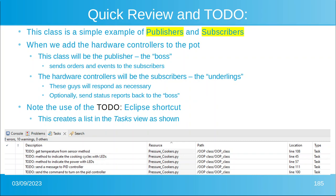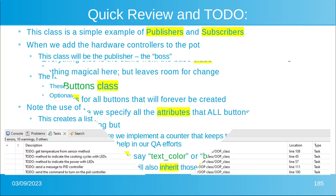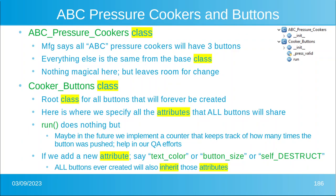That's how the pressure cooker knows what temperature the burner is at, for example. Note the use of the TODO with a colon shortcut from Eclipse. At the bottom of your screen you should see a tasks view. As you put comments with that keyword 'TODO' and then a colon, it'll make that list for you, keep it up to date, and tell you where to find your to-do items. Eclipse does a million things — that's just something I find very, very handy.